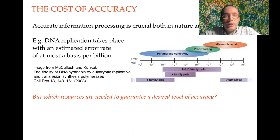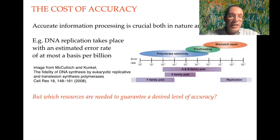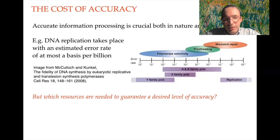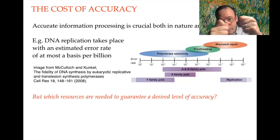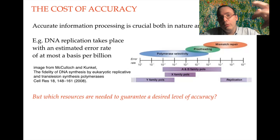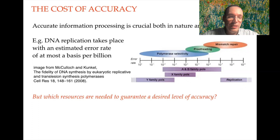We all know that accurate information processing is important — it is important to process information in a reliable way in our computer technology or in communication. But even in nature, the famous example of this is the replication of DNA that takes place in our bodies, in all living organisms. This process of copying DNA within cells is very accurate. The estimate is that errors when replicating DNA occur at most at a rate of one base per billion.